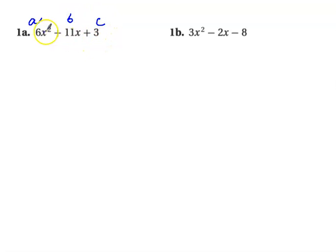So what we're going to do to factor is use the diamond and box method. I'm going to make the diamond first. Here on the top we're going to write the product of a and c, so 6 times 3 is 18.